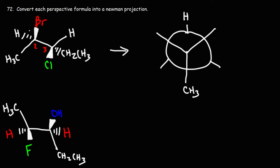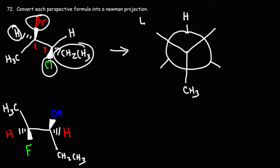Now hydrogen and the ethyl group — they're going into the page. Those groups are going to be on the left side of the Newman projection. Bromine and chlorine are coming out of the page, so when you view it this way, they're going to appear on the right side.